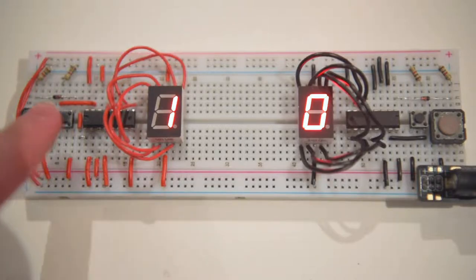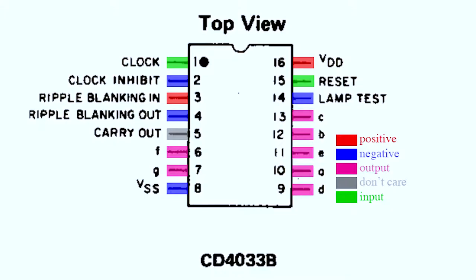When a high is presented to the reset pin, the scoreboard resets. The 4033 is wired up to each individual section of the scoreboard, as shown.